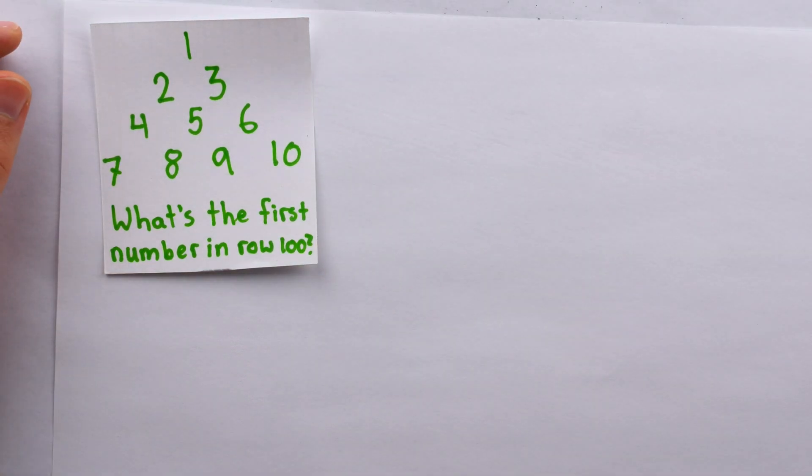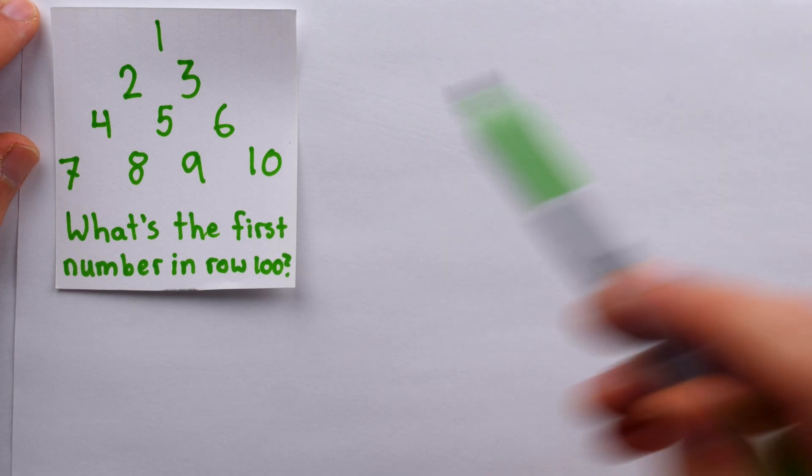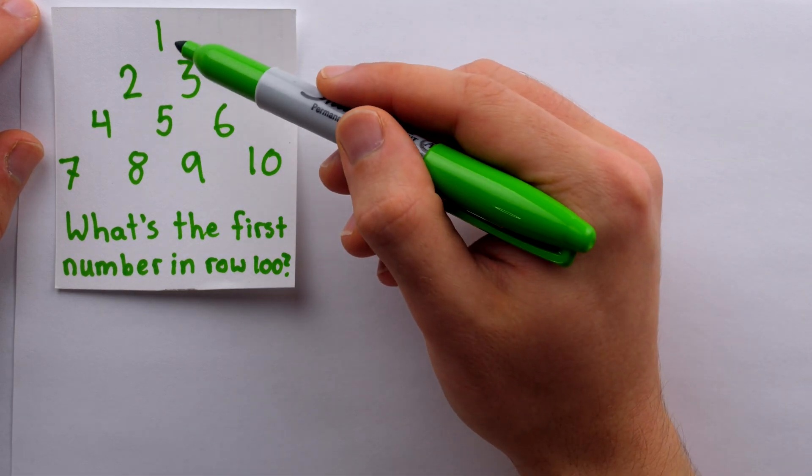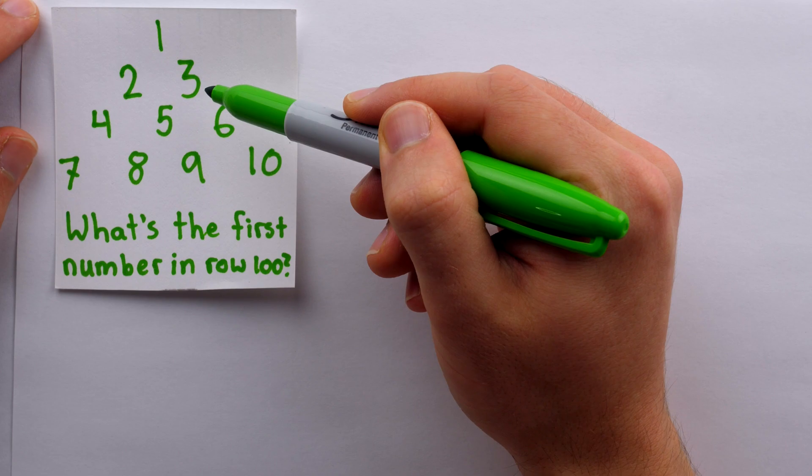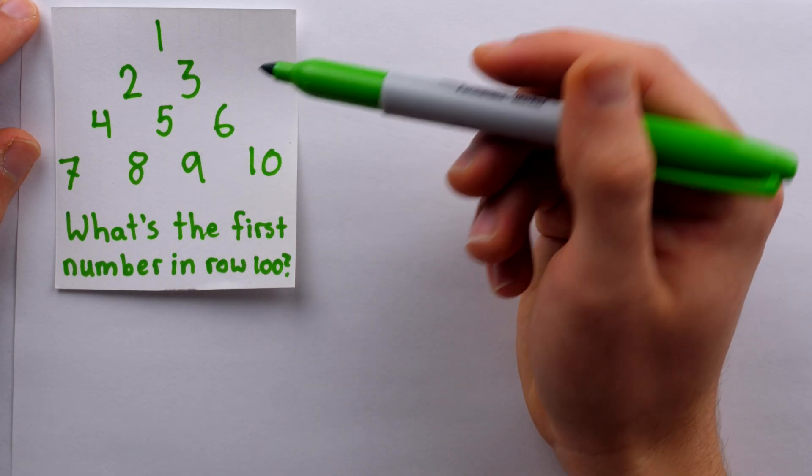Let's start with the green one. So here in each row, the numbers are just counting up by one: one, two, three, four, five, six, seven, eight, nine, ten, and so on. And also the length of each row is increasing by one. This row has length one, this row has length two, this row has length three, and so on.